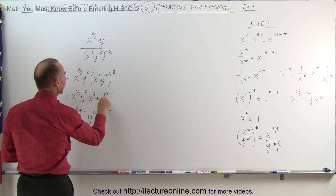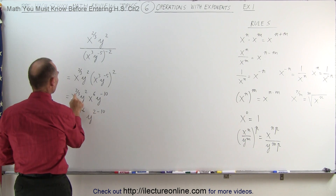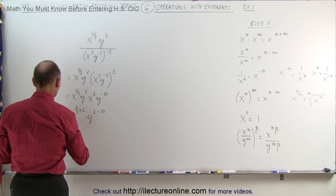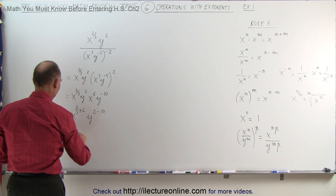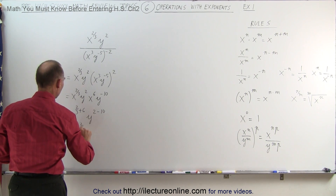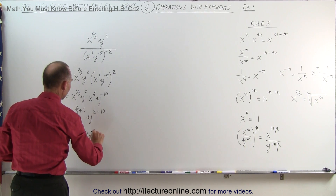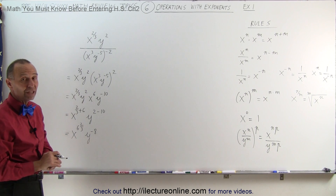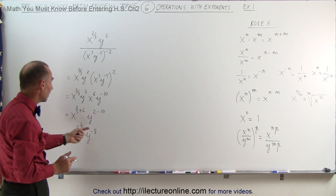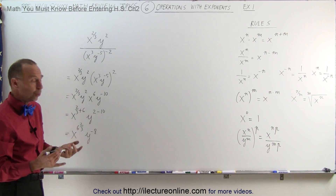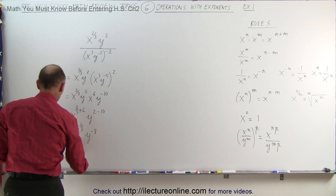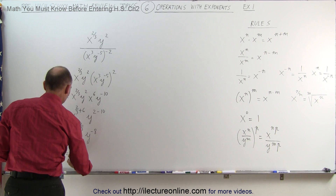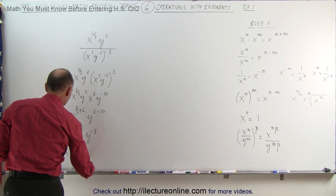I'm adding 2 and negative 10 together. So finally, when I simplify, this can be written as x to the six and two-thirds, y to the minus 8. I don't like negative exponents — typically you don't want to leave things in terms of negative exponents. So we can move y to the negative 8 to the denominator and turn it into y to the positive 8. This can be written as x to the six and two-thirds power divided by y to the 8 power.